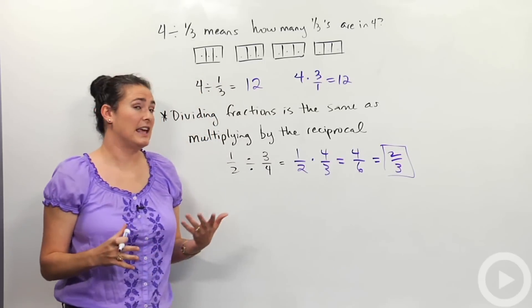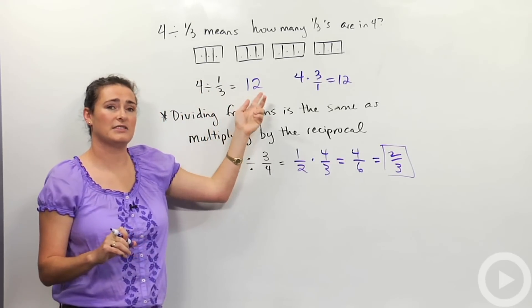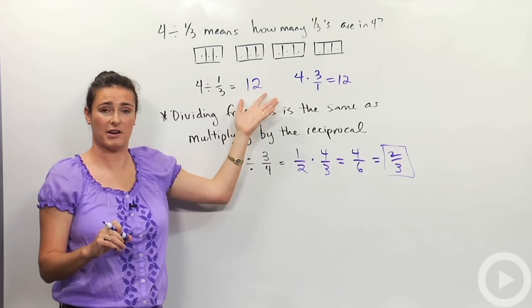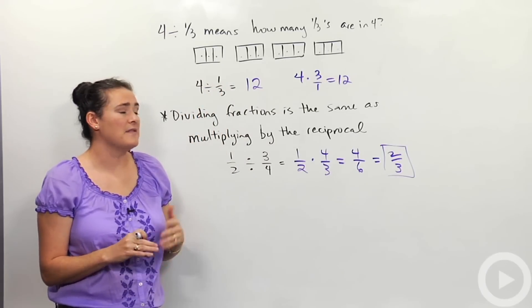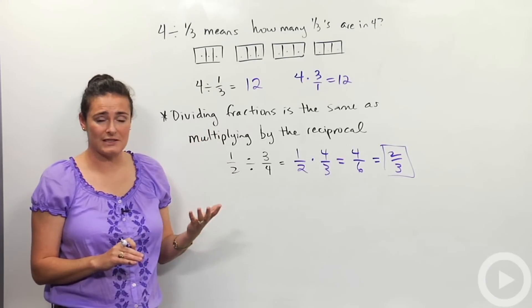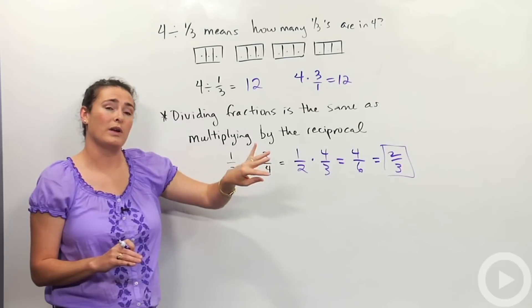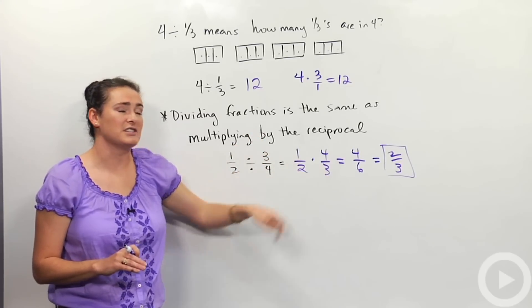So there's a couple of different things to take away. The first is that sometimes when you divide things, your quotient might be bigger than the original numbers that you were working with. And the second thing to take away is that when we're dividing fractions, what we do is we leave the first fraction the same, the second fraction we make it a reciprocal and change the sign to multiplication.